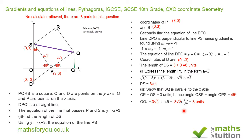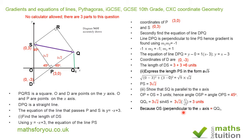Meanwhile, OS also has a value of 3 units and is perpendicular to the x-axis, just like QQ₁. This means that SQ is parallel to the x-axis. I hope that all made sense. Please subscribe, thank you for watching, and hopefully see you again sometime.